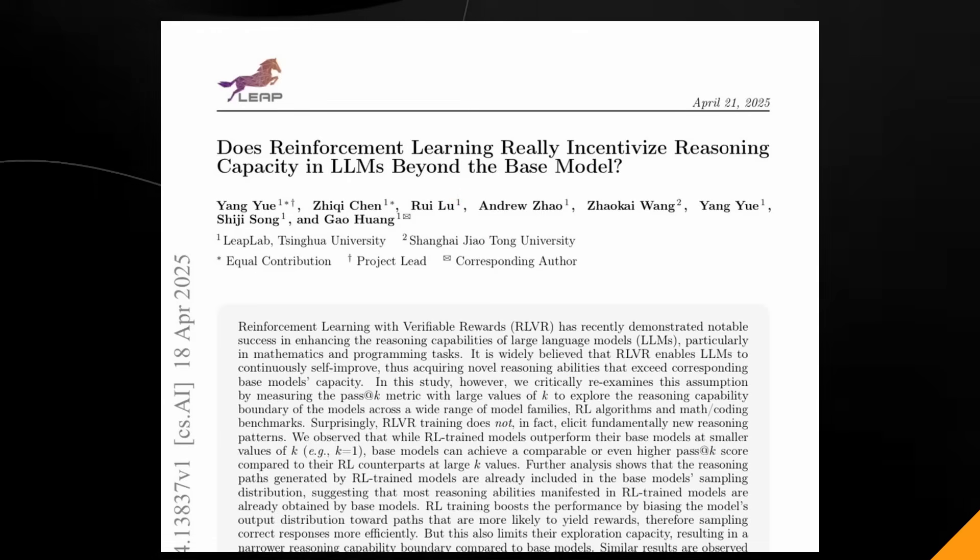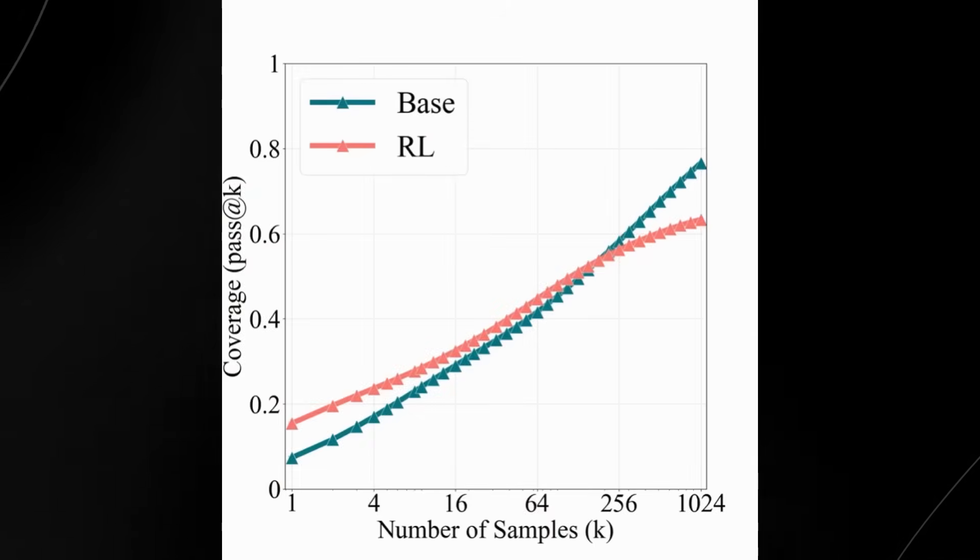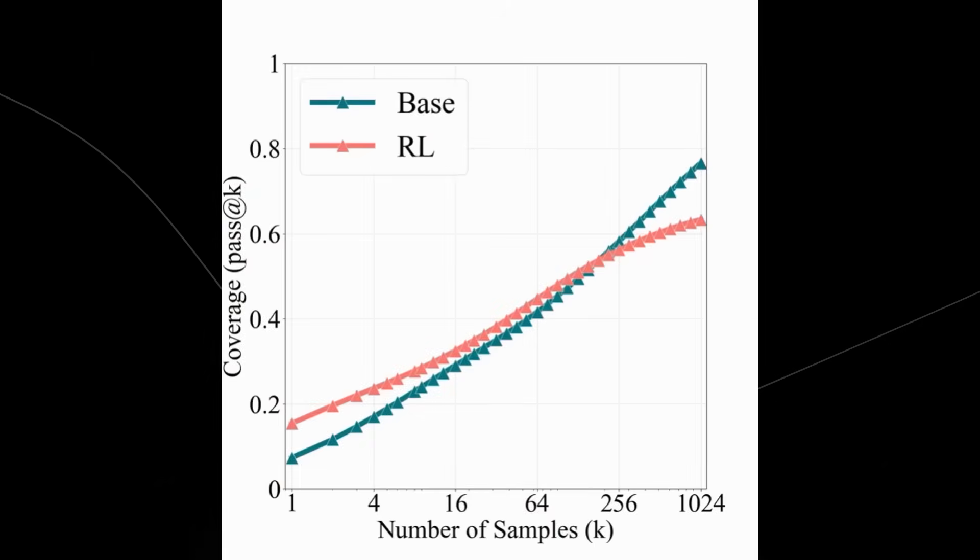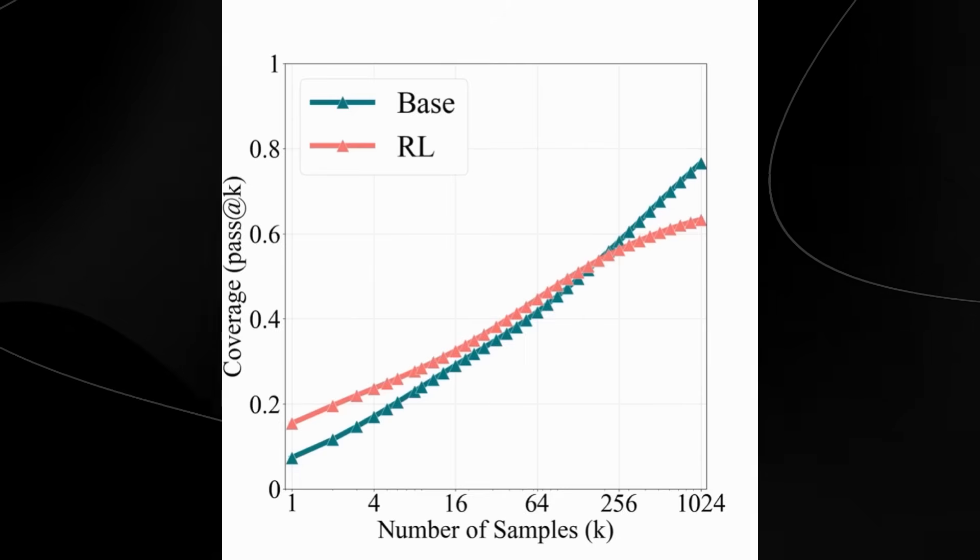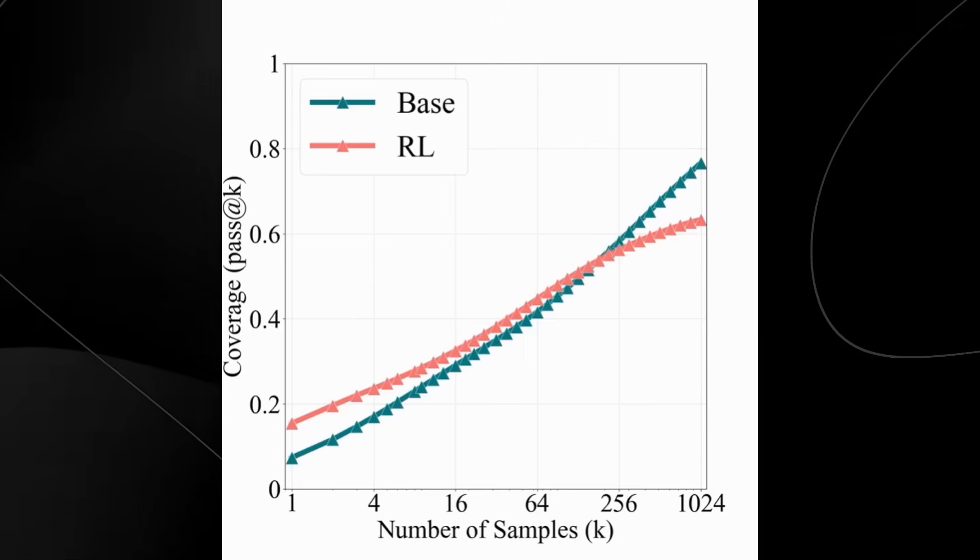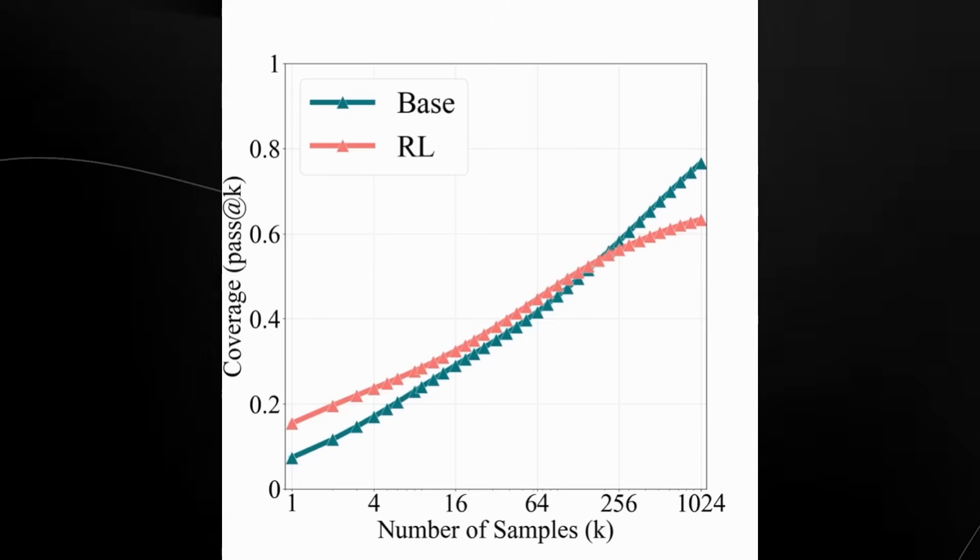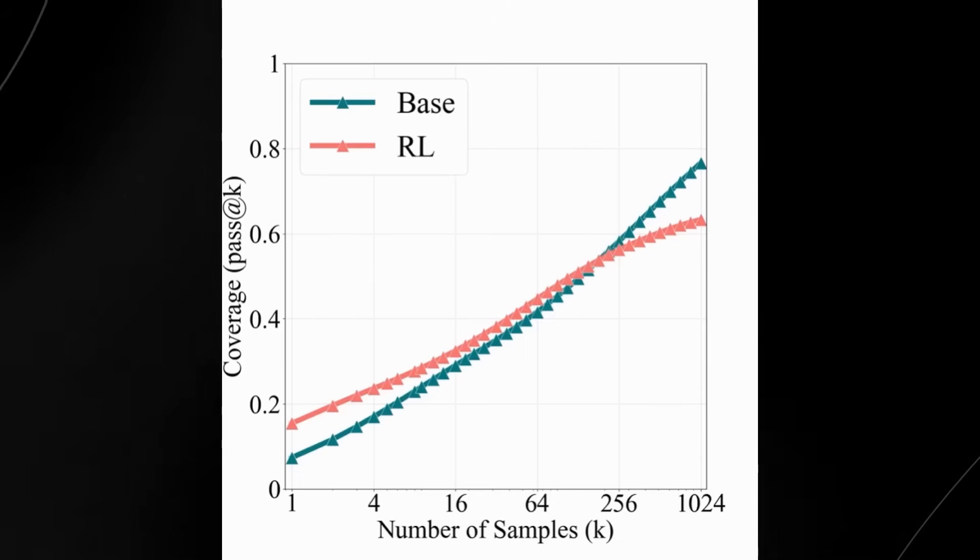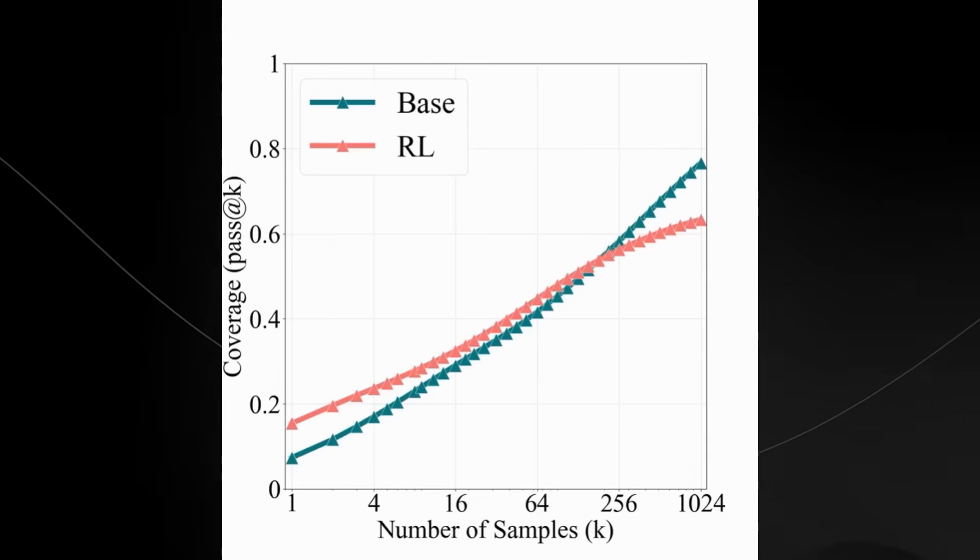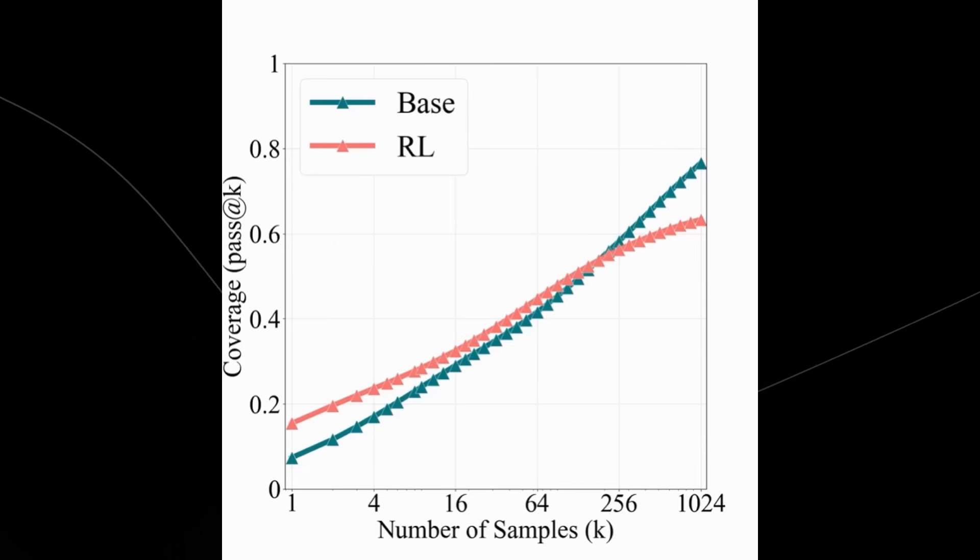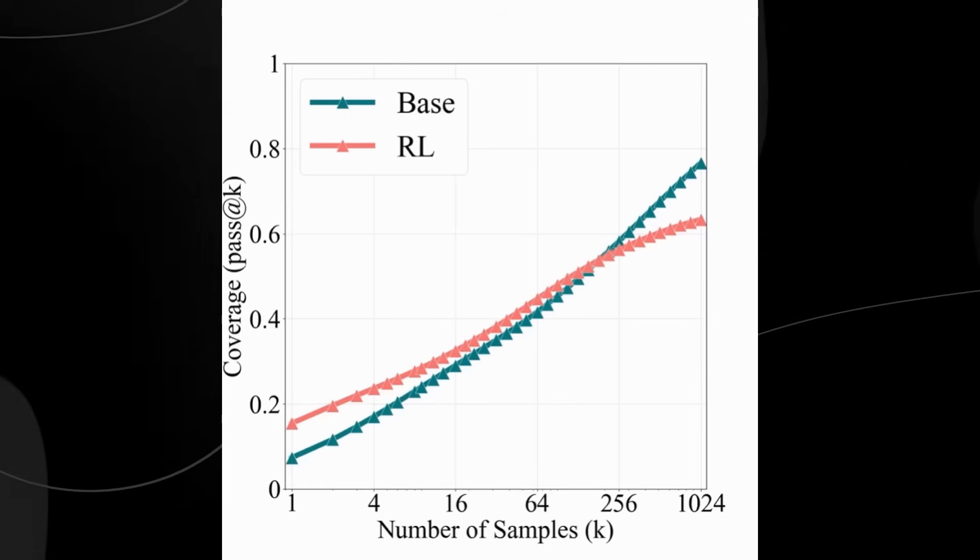So let me break down to you guys exactly what they did. Take a look at this image that will help you understand the results of this paper. What did these researchers actually do? Well, they took two different types of AI: one trained the normal way called the base model, so that's just the base model, no changes to it whatsoever, and one trained with extra reinforcement learning called the RLVR model.